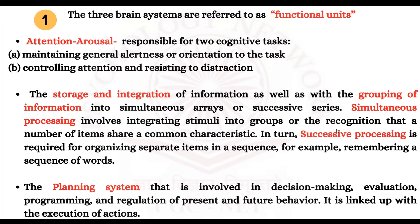The second brain system is responsible for the storage and integration of information, as well as the grouping of information into simultaneous arrays or successive series. Simultaneous processing is when the same type of stimuli are put into the same kind of groupings — essentially a schema is being formed. Successive processing is when, for example, you are given a list of words like cat, dog, tree, and you have to remember them in that exact order: cat, dog, tree.